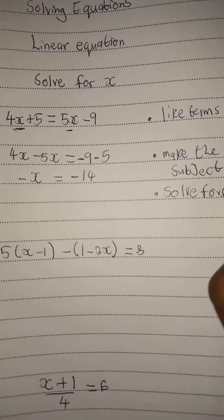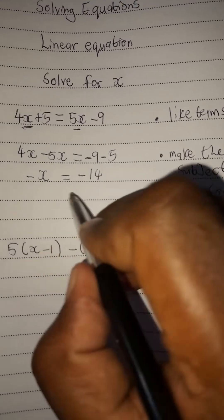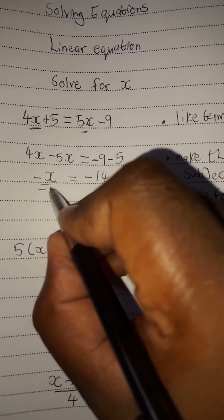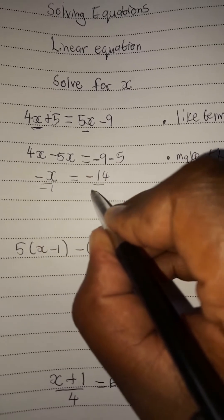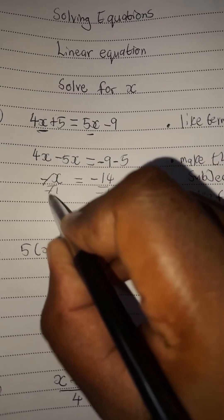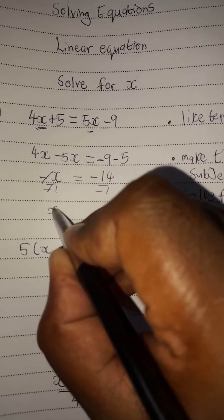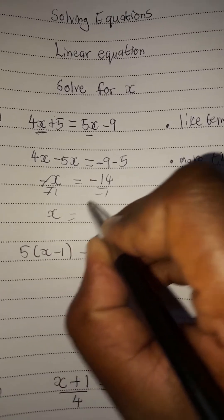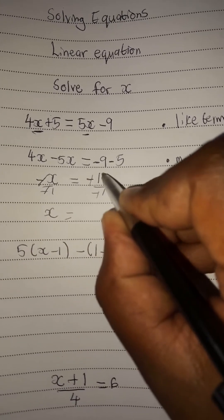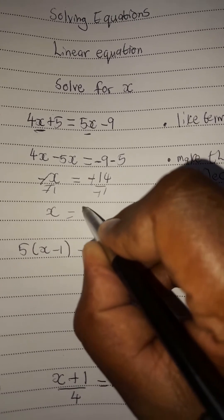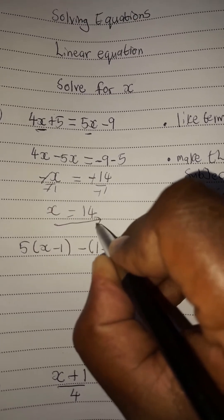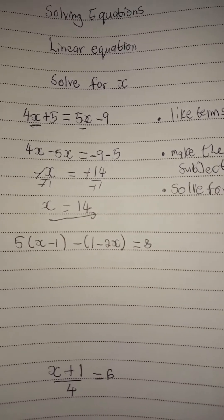In this case, we are going to divide by negative 1. When you divide by negative 1 — let's divide by negative 1 — this negative and negative, they cancel. x divided by 1 is x. Negative and negative cancel. 14 divided by 1 is 14. So meaning that our solution is 14.